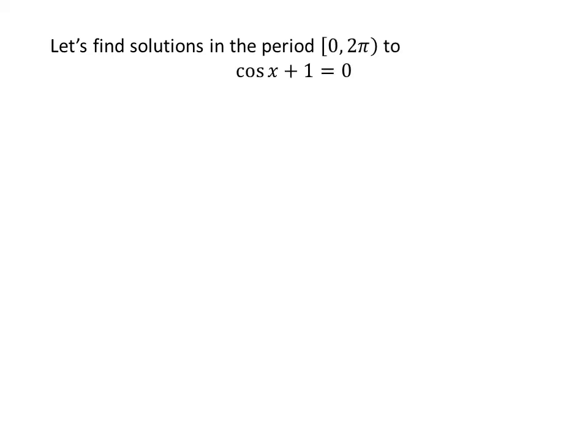Let us first find the solutions to the equation cosine of x plus 1 is equal to 0 in the period 0 to 2 times pi, as cosine is a periodic function with period 2 times pi. Taking 1 from the left hand side to the right hand side gives us cosine of x is equal to minus 1.